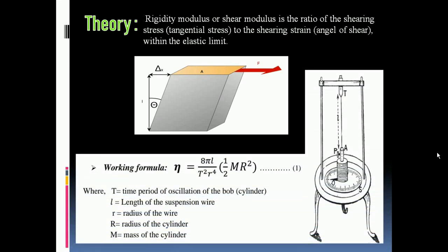The working formula is given by η = (8πl)/(T²r⁴) × (1/2)MR². Here in this formula, the capital T denotes the time period of oscillation of the bob, the small l denotes the length of the suspension wire, and small r denotes radius of the wire.